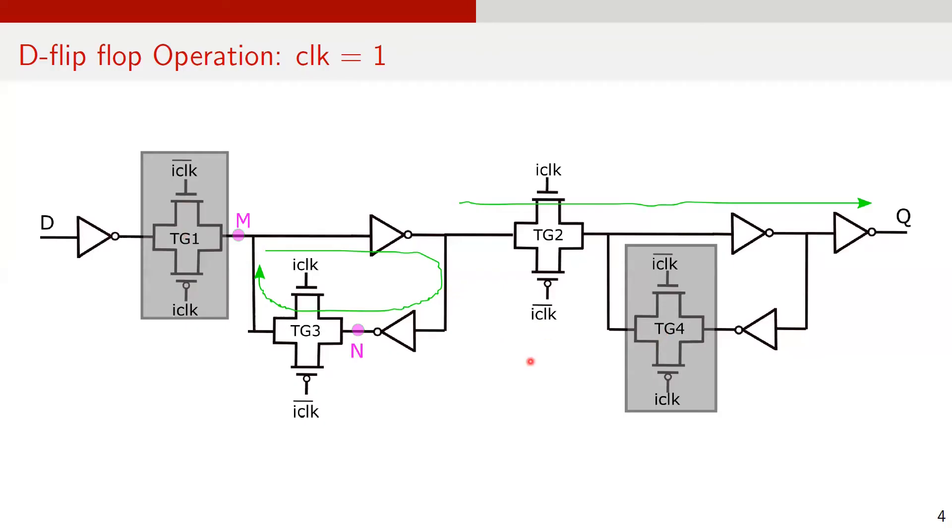This allows keeping the new data stored in the master latch and also passes the new data to output port Q. Because TG1 is off, this isolates input D from master latch to prevent any changes at the input port from affecting the stored data in the master latch.